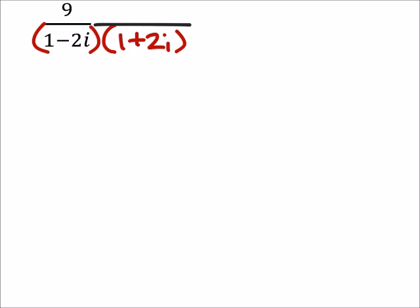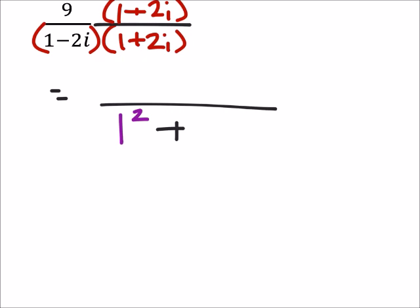But I will have to multiply the numerator by 1 plus 2i as well. So from this, since I'm multiplying by a conjugate, I can take the a which is 1 and square it, and then I can add the b value which is 2 and square it.